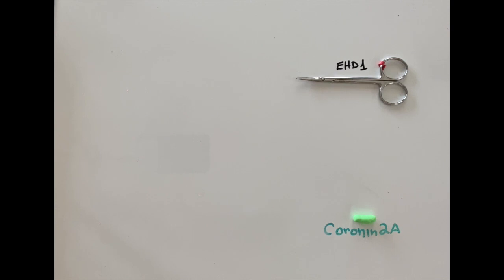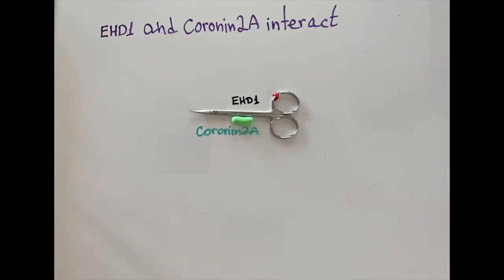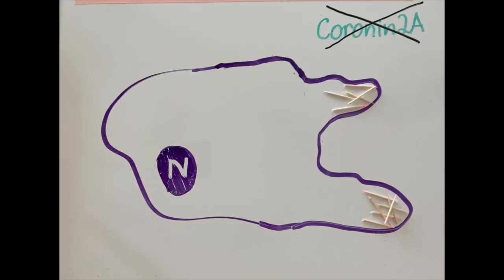We identified an interaction between EHD1 and an actin regulatory protein called coronin-2A. Coronin-2A knockdown caused unusually large branched actin protrusions, suggesting that coronin-2A blocks actin branching.